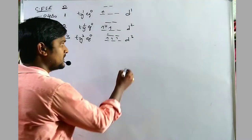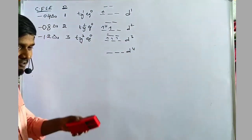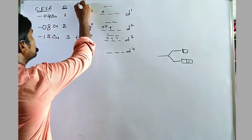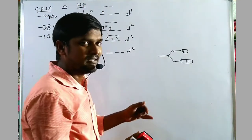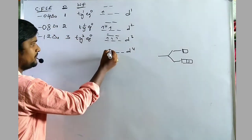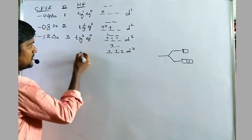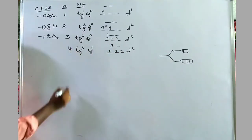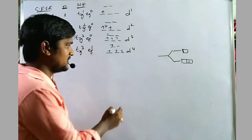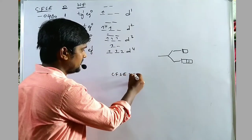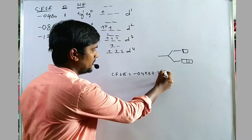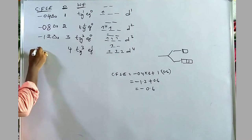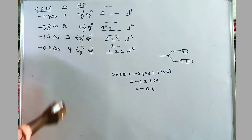D3 gives CFSE = minus 1.2 ΔO. For D4 in high spin (weak field), the splitting gap is small so the fourth electron enters the EG level, giving configuration T2G³EG¹. Number of unpaired electrons = 4. CFSE = minus 0.4 × 3 + 0.6 × 1 = minus 1.2 + 0.6 = minus 0.6 ΔO.